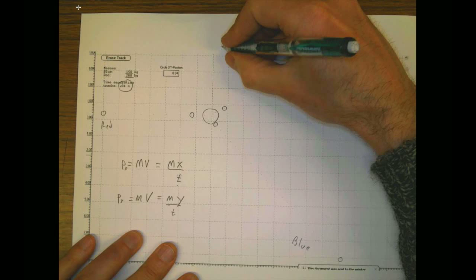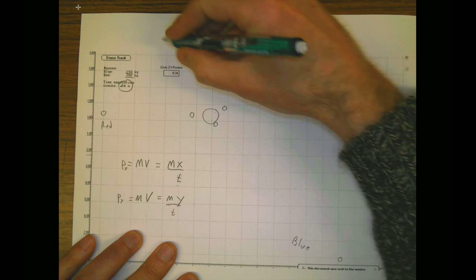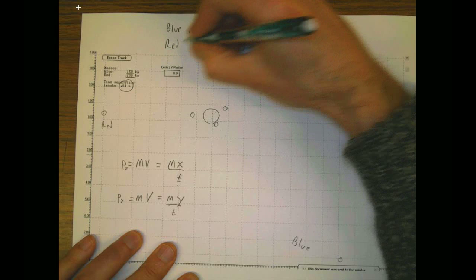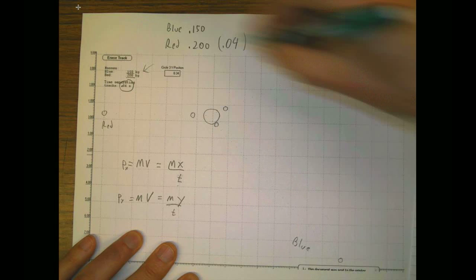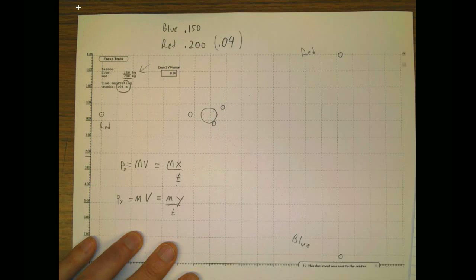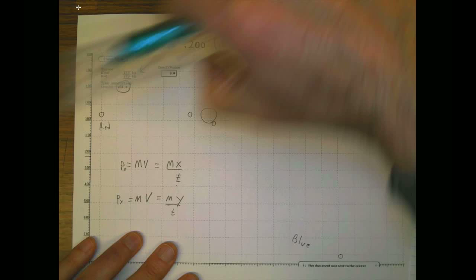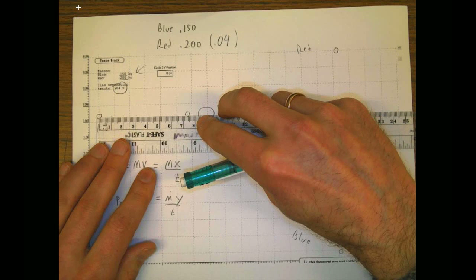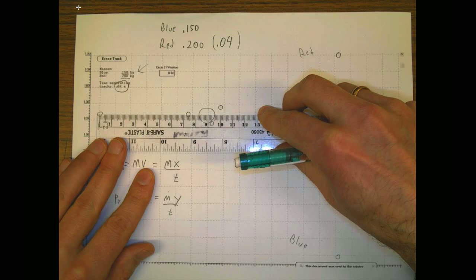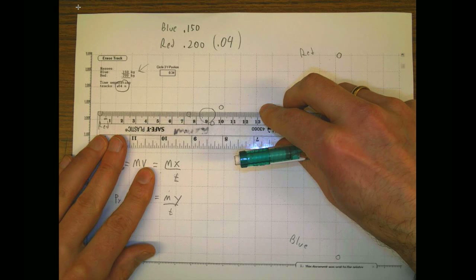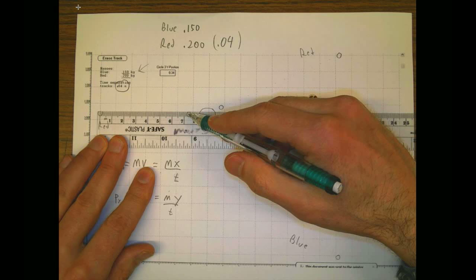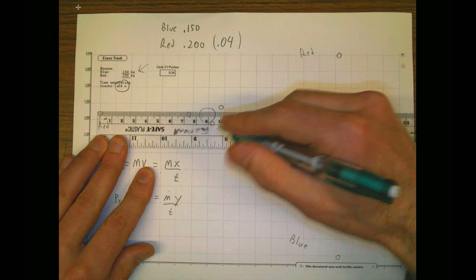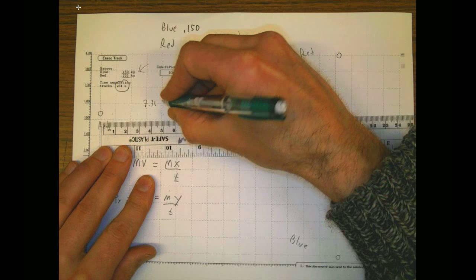The blue one has a mass of 0.150 and the red has a mass of 0.200. So the basic idea is we're literally going to measure these things. I'm going to measure mass times distance divided by time. Using the clear ruler, you can just put it right on top. The red one is — I'm going to say 7.36 centimeters.